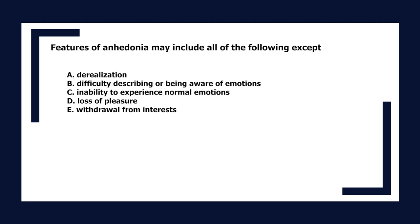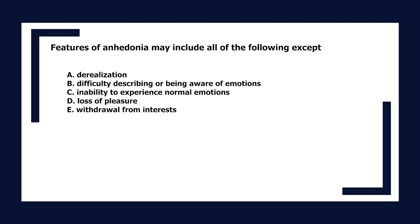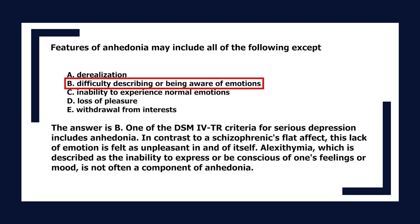Features of anhedonia may include all of the following except: A. Derealization, B. Difficulty describing or being aware of emotions, C. Inability to experience normal emotions, D. Loss of pleasure, E. Withdrawal from interests. The answer is B. Anhedonia is one of the DSM-IV-TR criteria for serious depression. In contrast to a schizophrenic's flat affect, this lack of emotion is felt as unpleasant. Alexithymia—inability to express or be conscious of one's feelings—is not often a component of anhedonia.